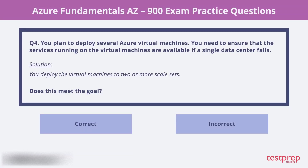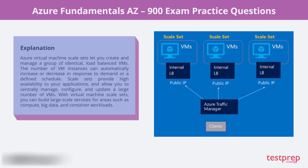Question 4. You plan to deploy several Azure virtual machines. You need to ensure that the services running on the virtual machines are available if a single data center fails. Solution: You deploy the virtual machines to two or more scale sets. Does this meet the goal? Yes, it will. Azure virtual machine scale sets let you create and manage a group of identical, load-balanced VMs. The number of VM instances can automatically increase or decrease in response to demand or a defined schedule. Scale sets provide high availability to your applications and allow you to centrally manage, configure, and update a large number of VMs. With virtual machine scale sets, you can build large-scale services for areas such as compute, big data, and container workloads.